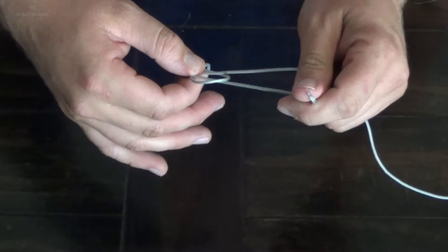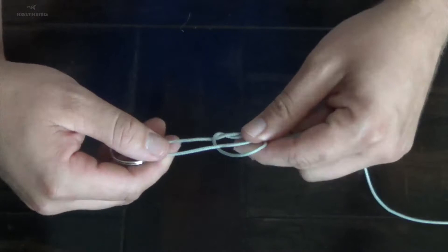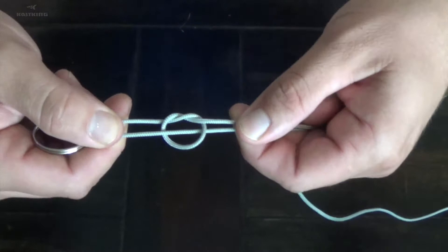And at this point, this is when you can pull and adjust how big or small you want to make your loop. You can see this is what you have so far.